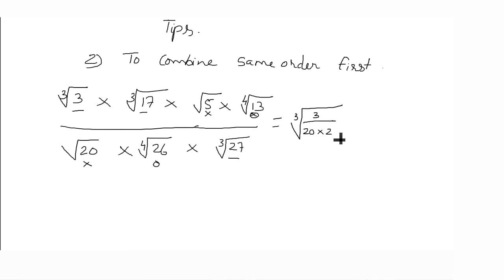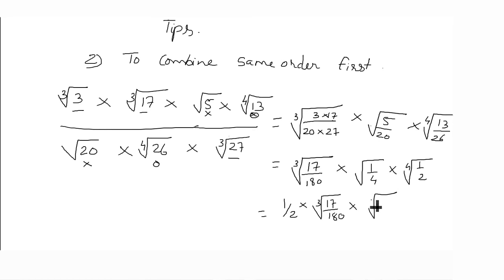Into 5 upon 20 which will come under square root, and into 4th root of 13 upon 26. Now if we have solved the cube root, or to solve the number, then cube root of 17 upon 180 into square root of 1 upon 4 into 4th root of 1 upon 2. 1 upon 4 square root of 1 upon 2. So I have solved the rational part side. And the final answer I show half into cube root of 17 upon 180 into 4th root of half. So here rational and irrational.